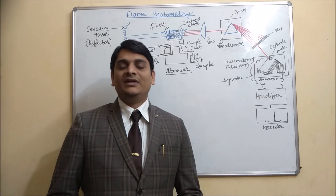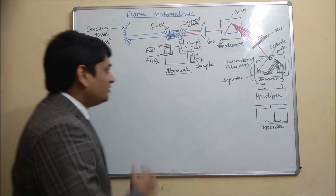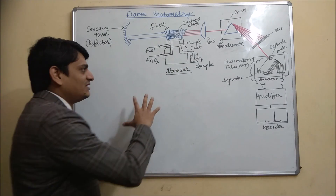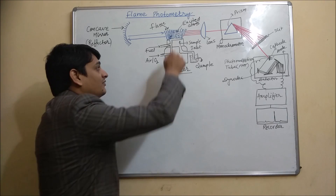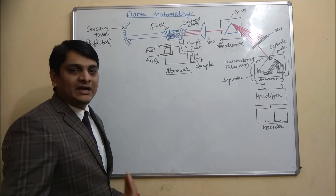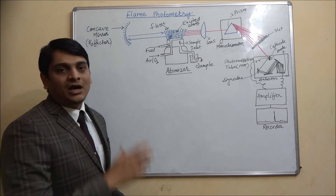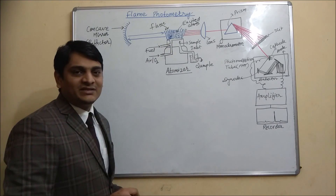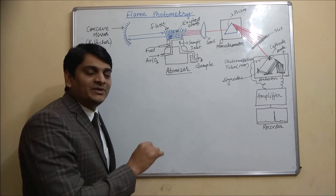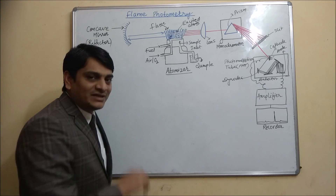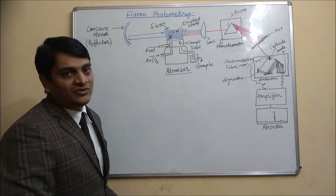Hello friends, today I am going to discuss the instrumentation of flame photometry, as I have already discussed the principle in the first part of this video. In flame photometry, a liquid sample goes to the flame, converts into atoms in the form of vapors, and those atoms get thermal energy from the flame. They go to the excited state, then come down to the ground state, releasing emitted radiations, which are measured in flame photometry.